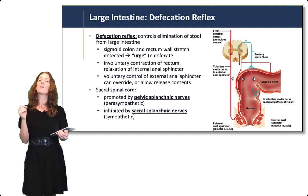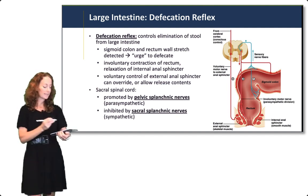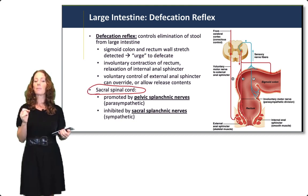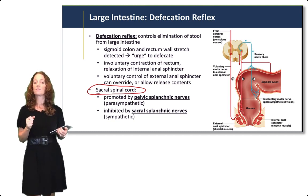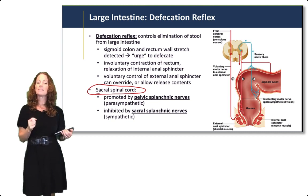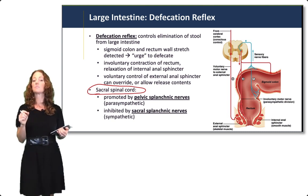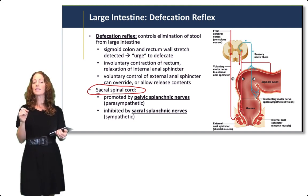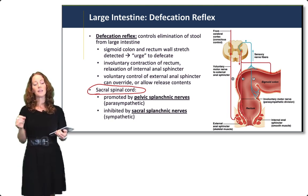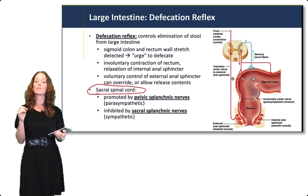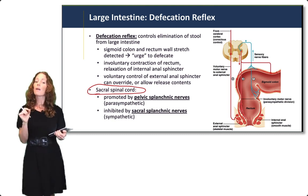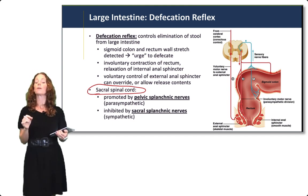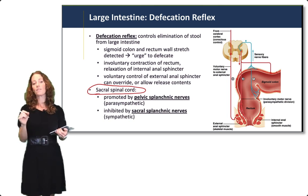It's very important to understand that the defecation reflex is controlled by the sacral spinal cord. It is promoted by parasympathetic input from the pelvic splanchnic nerves and inhibited by sympathetic input from the sacral splanchnic nerves. Damage to the sacral spinal cord can lead to incontinence — the inability to control the defecation reflex — which is a red flag for spinal cord damage.